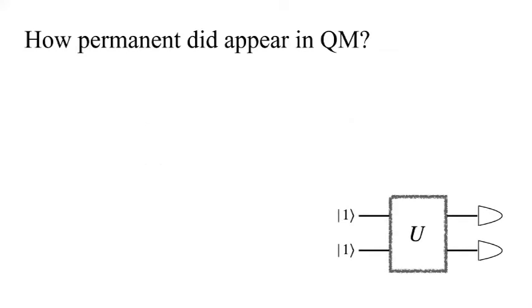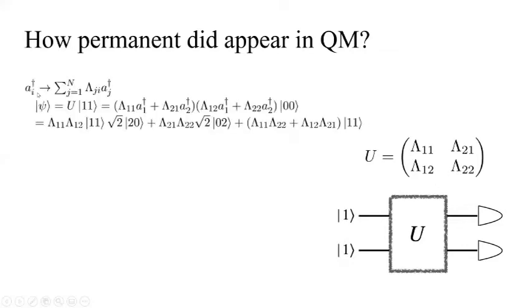Now the next question is, how does permanent appear in quantum mechanics? Let's consider a simple two-mode boson, a two-mode photon. We start from the occupation one-photon state before the quantum circuit U. Suppose we have linear mode transformation U, which is described by this lambda matrix. This means that a_i dagger will transform with respect to a_j dagger.